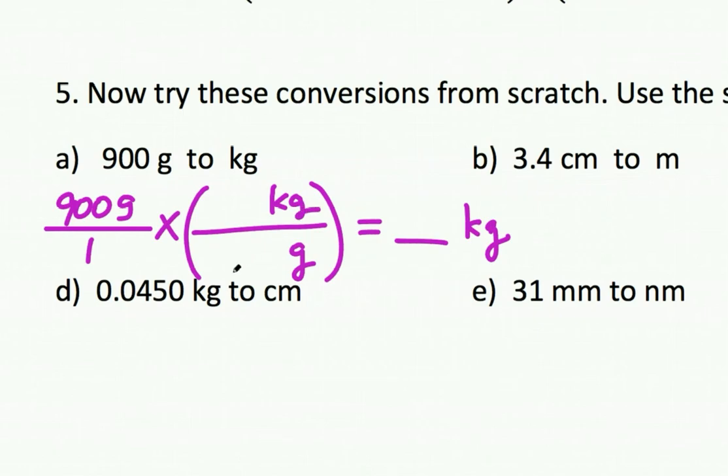Then I need to figure out what these numbers are. Now kilo means a thousand, so 1 kilogram is a thousand grams. And then you do everything on the top multiplied, divided by everything in the bottom. So 900 times 1 divided by 1, which is the same divided by a thousand. So 900 divided by a thousand is 0.9.